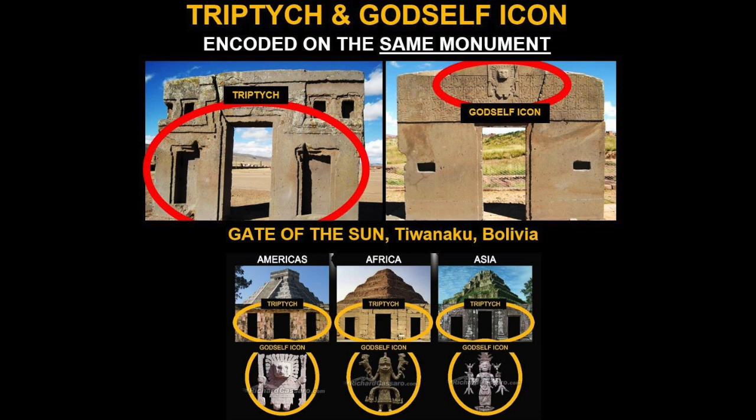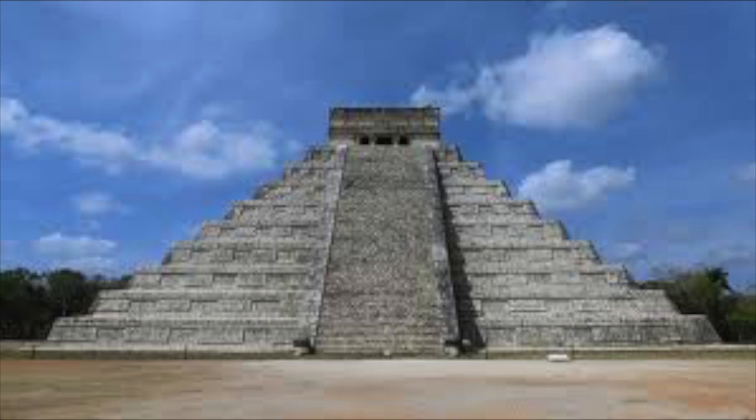The triptych can be traced back to ancient cultures. And if you see here — the Americas, Africa and Asia at the bottom — the pyramids. If we look at the Aztec pyramid in Mexico, you can see at the top of the pyramid we have the three, i.e. the triptych.